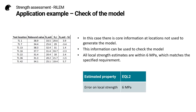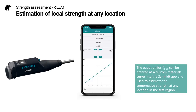In this case, we have core information at several locations that were not used to generate the model, and we can use this to check the accuracy of the model. You can see that all of the local strength estimates given by the regression are within the 6 MPa which is specified. The regression that we've created can be entered as a custom materials curve into the Schmidt app and then used to estimate the strength at any location in the test region.